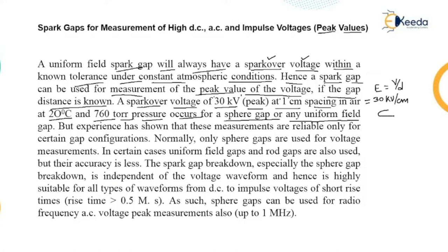This occurs for a sphere gap or any uniform field gap. A uniform field gap consists of two disc electrodes placed and separated by a certain distance — for example 1 centimeter. Application of 30 kilovolts across this 1 centimeter gap produces a spark over voltage. It is called a uniform field gap because the cross-sectional area and volume of both electrodes is the same throughout.